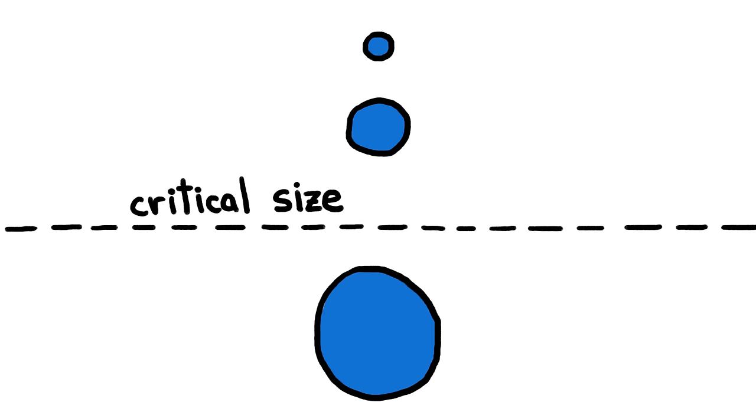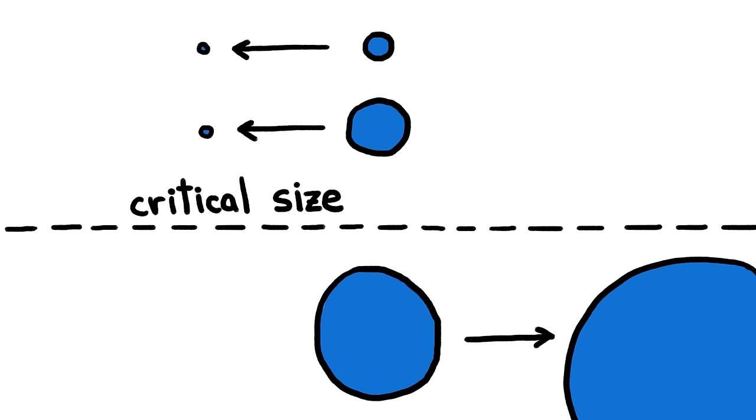Which means that up until a certain critical size, a cluster's chances of shrinking are better than its odds of growing. Unfortunately, that critical size is 150 million molecules.